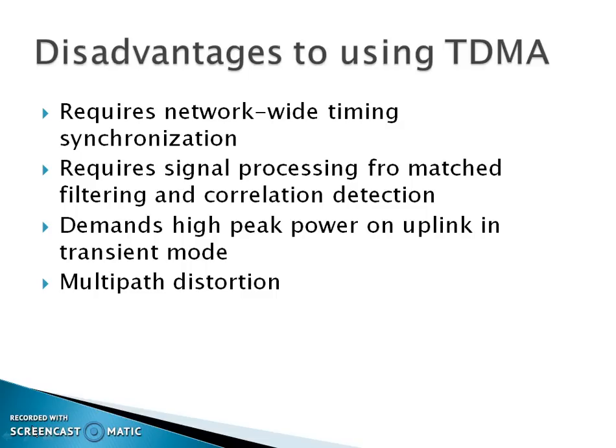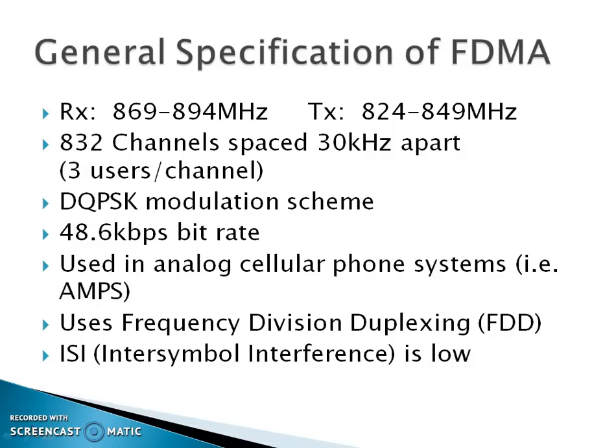When there are advantages, there are also disadvantages of TDMA. It requires network-wide timing synchronization. Second, it requires signal processing for matched filtering and correlation detection. Third, it demands high peak power on the uplink in transient mode, and fourth is multipath distortion.